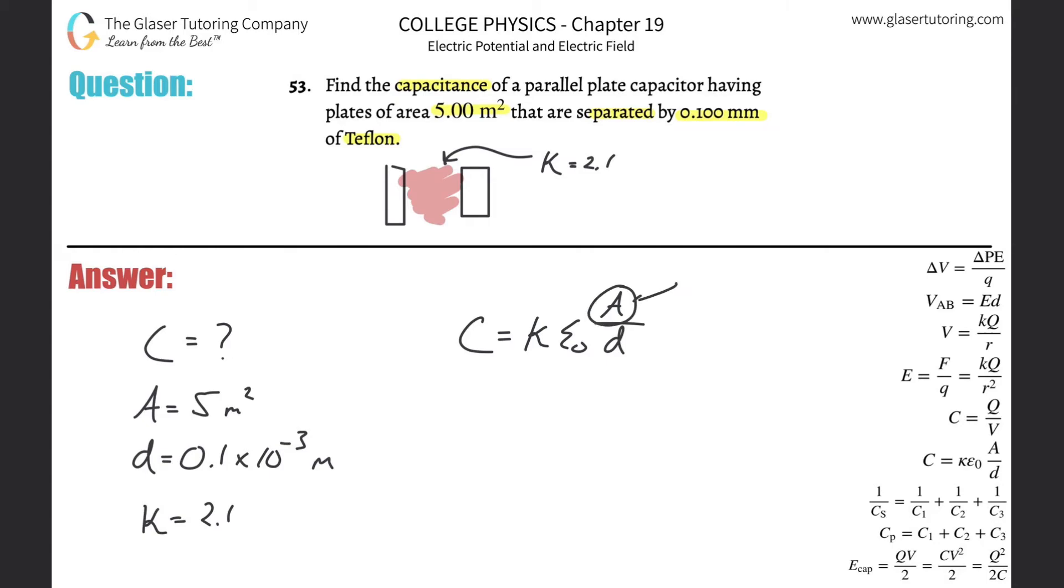Basically when you look at the area, if each plate has an area of 5 square meters, don't add them together, you're not really taking the total area of the two plates together, you're taking the area of one of them, okay?